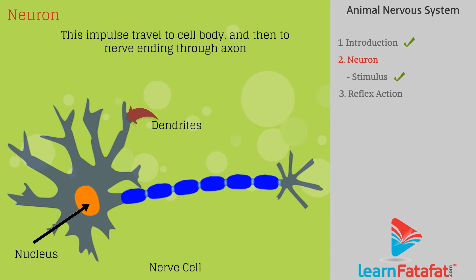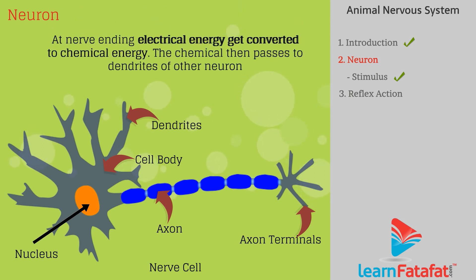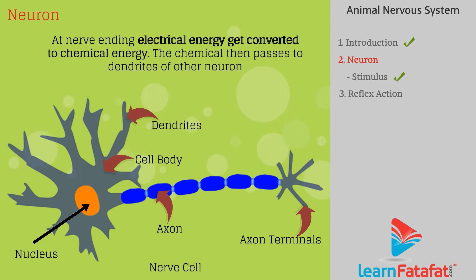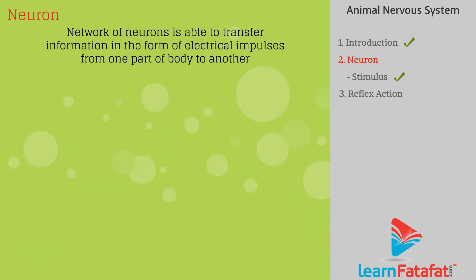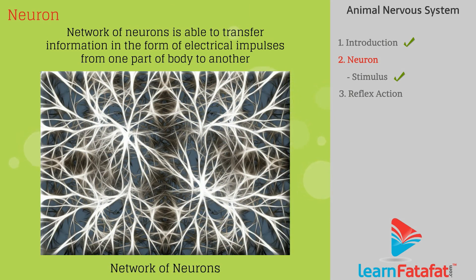The electrical impulse generated due to the stimulus travels to the cell body and then to the nerve ending through the axon. At the nerve ending, electrical energy gets converted to chemical energy. The chemical then passes to the dendrites of another neuron and acts as a stimulus to the next nerve cell. Thus, such a network of neurons is able to transfer information in the form of electrical impulses from one part of the body to another.